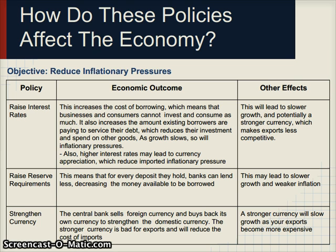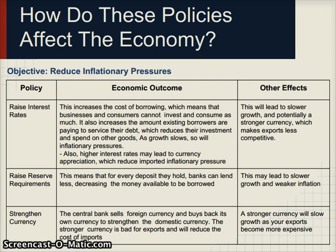The third anti-inflation policy is intervening in the currency market — selling foreign currency and buying back the domestic currency to strengthen it. A stronger currency is bad for exports and reduces the cost of imports, helping reduce inflationary pressures through both the growth channel and cheaper imports.